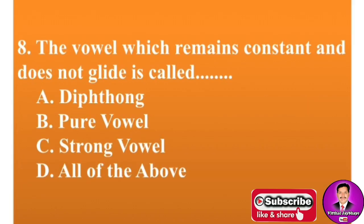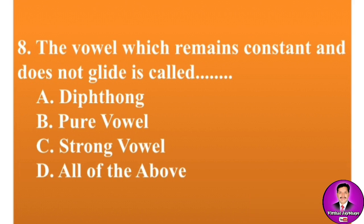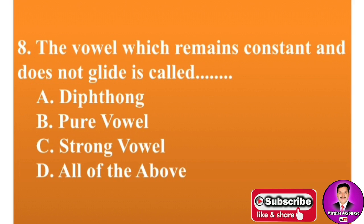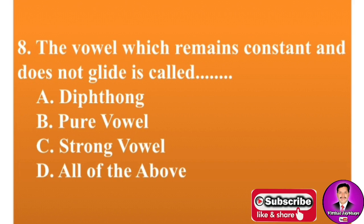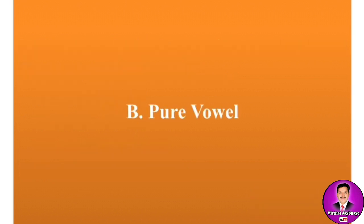Next MCQ: The vowel which remains constant and does not glide is called — options are: A, diphthong; B, pure vowel; C, strong vowel; D, all of the above. The correct answer is B — pure vowel.